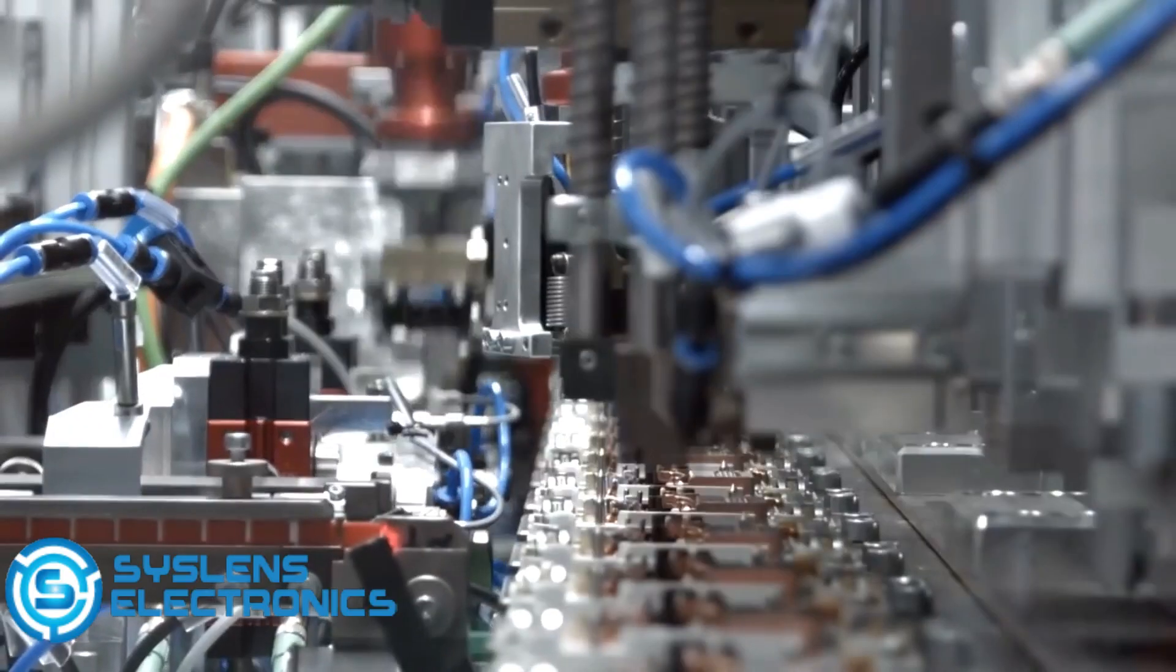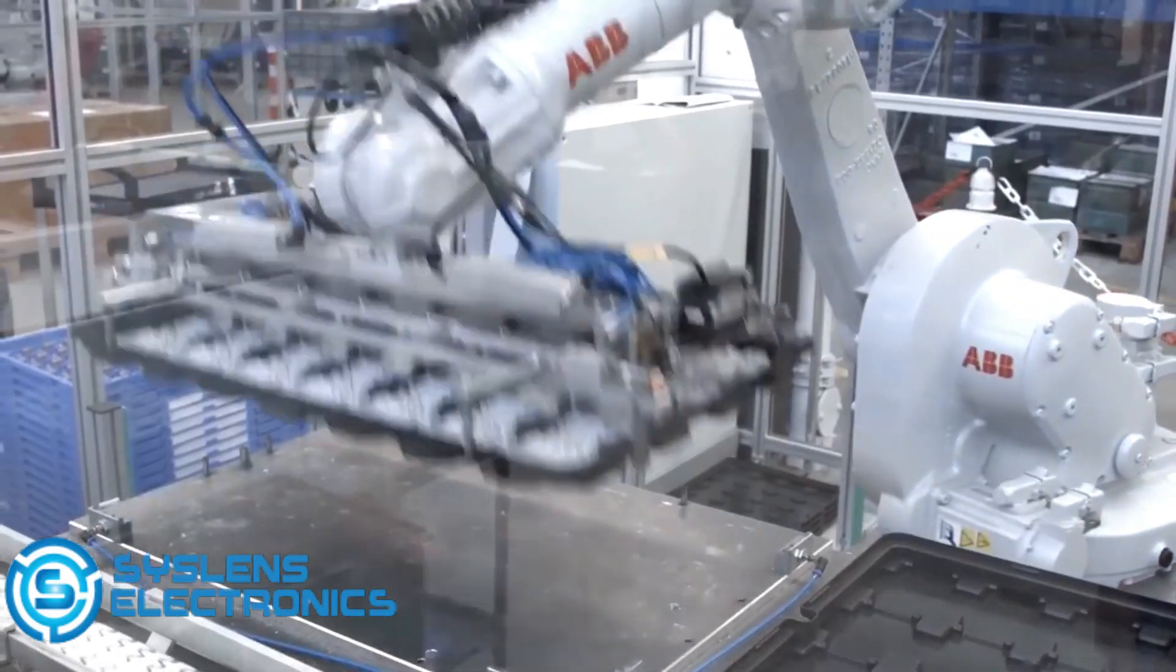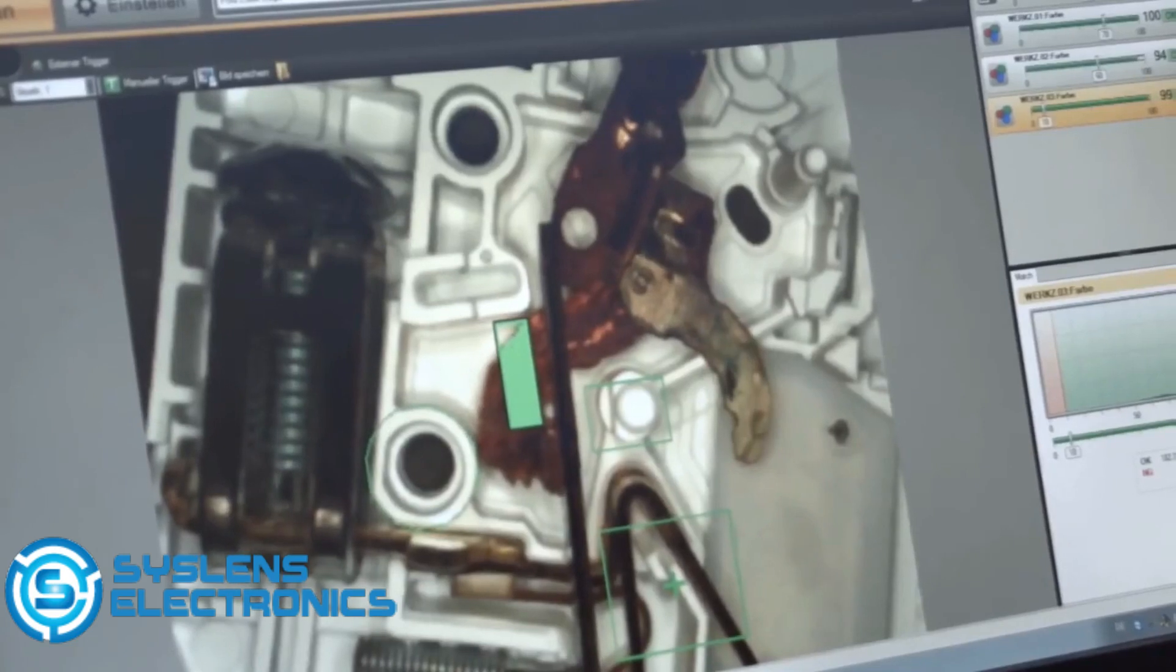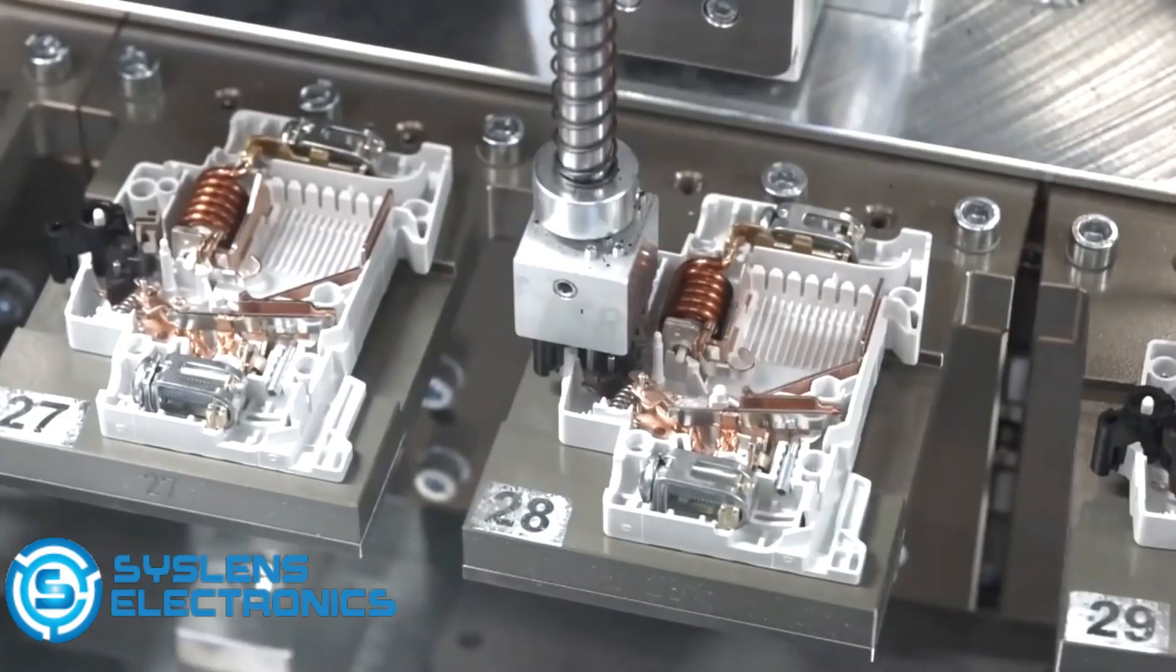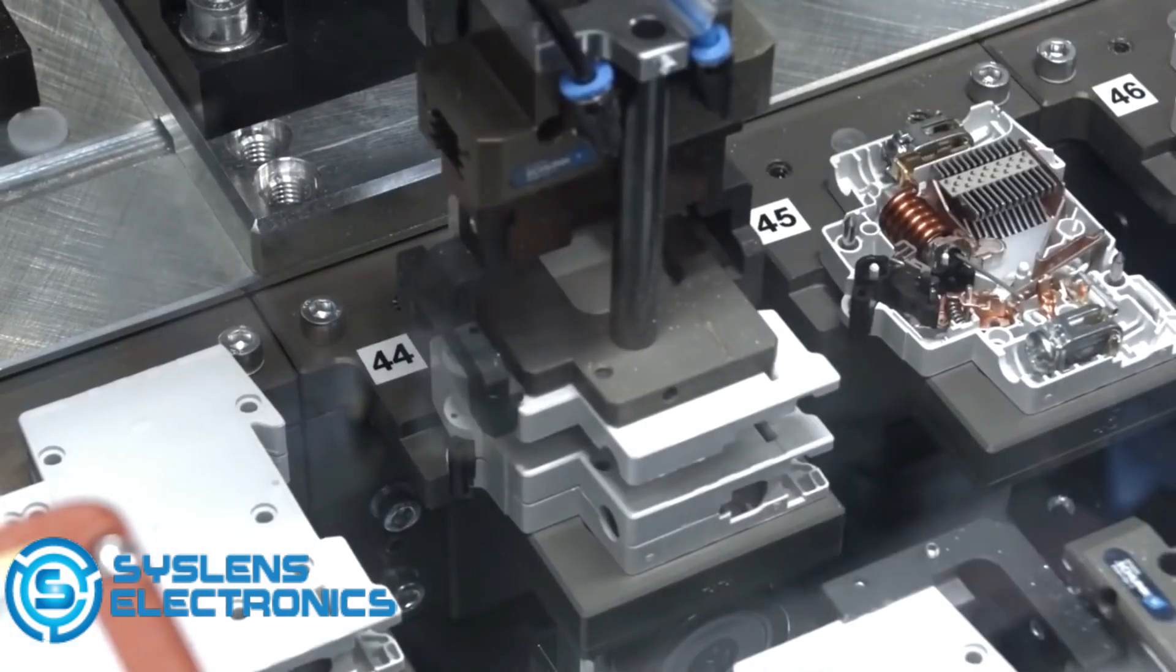The production stations work autonomously or together, adjusting their actions based on what happened at earlier stages of the manufacturing process. Cameras visually compare each component and trigger self-correction processes if any specifications aren't met.